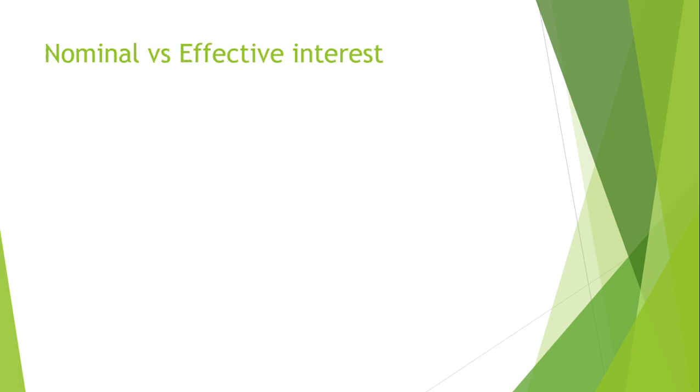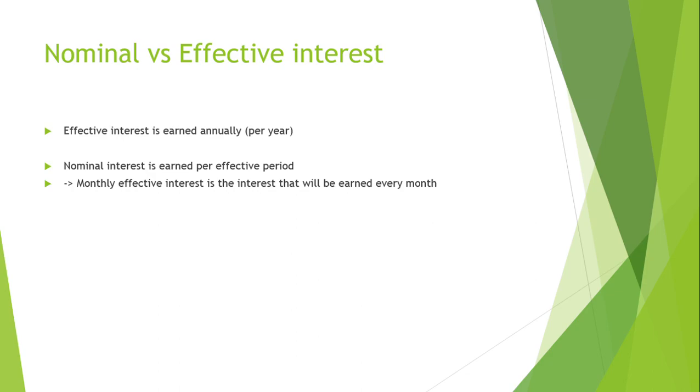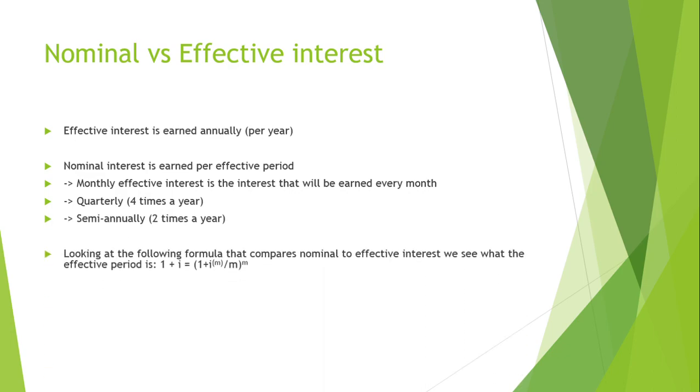Next, we'll be looking at nominal versus effective interest. Effective interest is earned annually per year. Nominal interest is earned per effective period. Monthly effective interest is the interest that will be earned every month for the year. Quarterly would be 4 times a year, semi-annually 2 times a year. Looking at the following formula that compares nominal to effective interest, we see what the effective period is. 1 plus i equals 1 plus im divided by m to the power of m. For monthly effective, you'll have m equals 12.